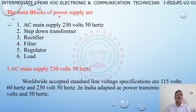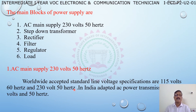The main blocks of our DC power supply are: AC main supply at 230 volts 50 hertz, step-down transformer, rectifier, filter, and regulator. The worldwide accepted standard line voltage specifications are 115 volts 60 hertz and 230 volts 50 hertz. In India, we use AC power transmission of 230 volts and 50 hertz.